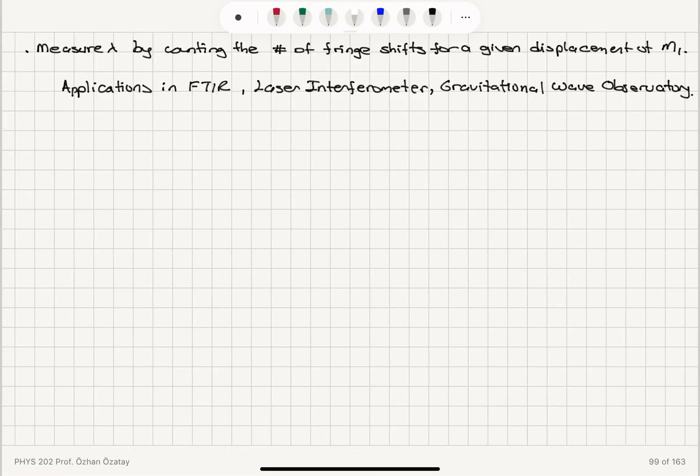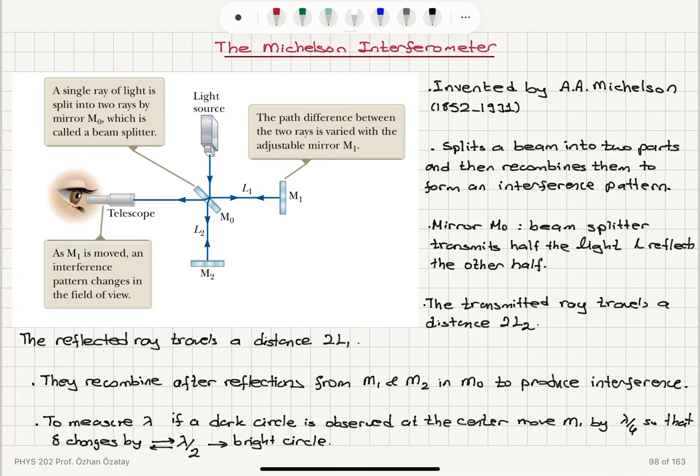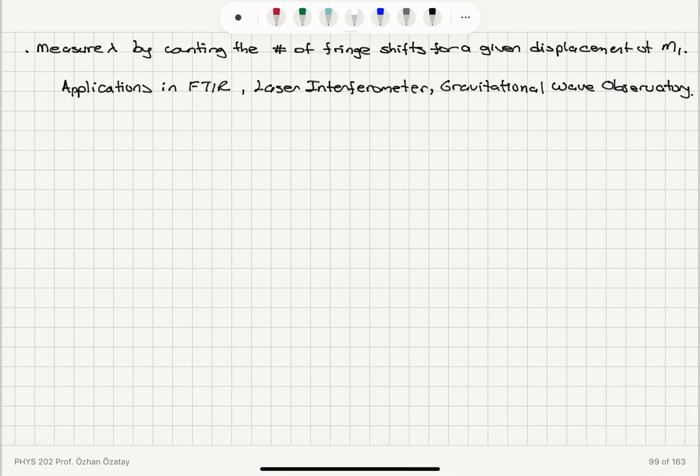So what we do is we measure lambda by counting the number of fringe shifts over a given displacement of M1. So as we move M1, there will be shifts between dark, bright, dark, bright, and we count the number of shifts to determine the wavelength.